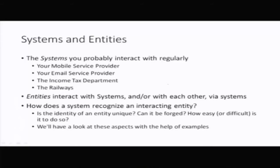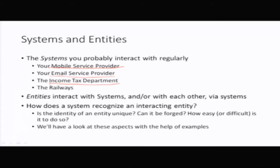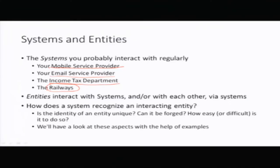Let's take some examples. Your mobile service provider is actually a system, because we interact with it on a daily basis — we make dozens of calls a day which get connected through some telephone exchange. The email service provider is a system as well. The income tax department is a system too — we interact with them via their website and their offices. Finally, railways: we all book tickets via IRCTC's website and at their counters. So the railways themselves are also a system.